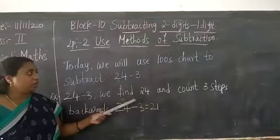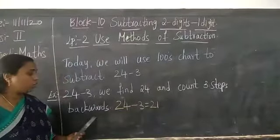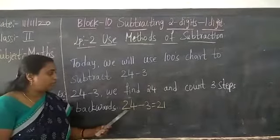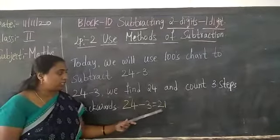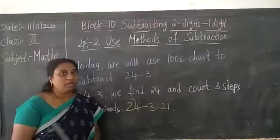We find 24 and count 3 steps backwards. 24 minus 3, the answer is 21. How children, we find out in our 100 chart.